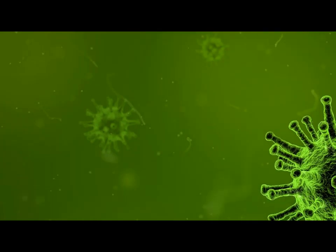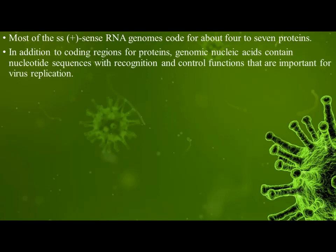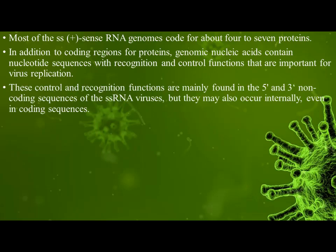Most single-stranded (SS) plus-sense RNA genomes code for about 4 to 7 proteins. In addition to coding regions for proteins, genomic nucleic acids contain nucleotide sequences with recognition and control functions that are important for replication. These control and recognition functions are mainly found in the 5' and 3' non-coding sequences of single-stranded RNA viruses, but they may also occur internally, even within coding sequences.